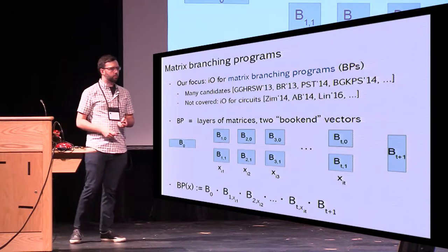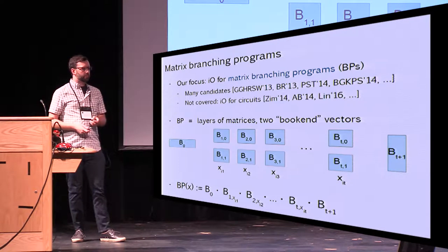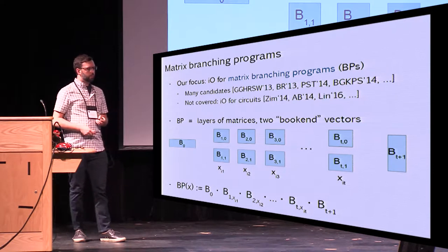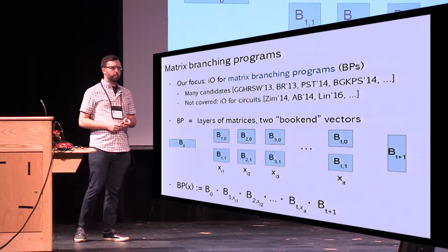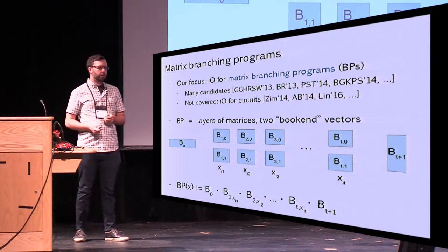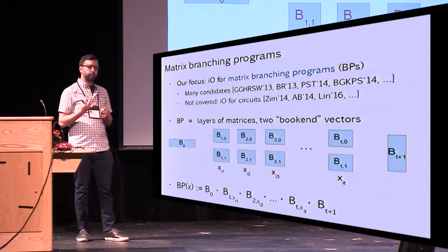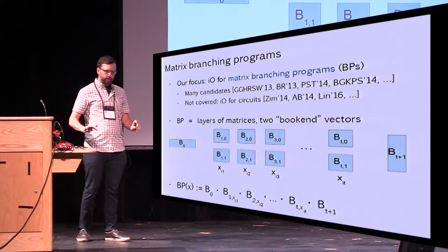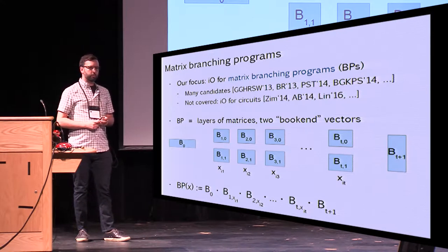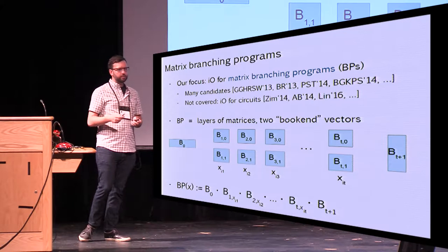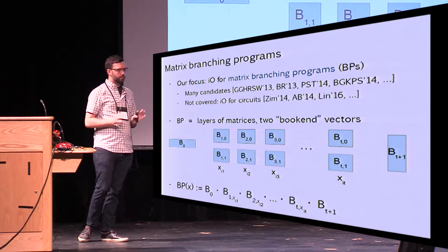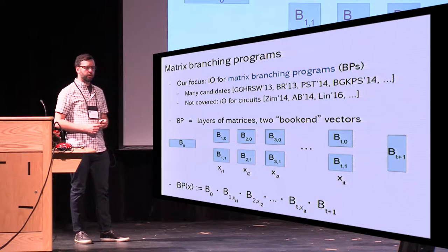The model of computation I care about in this talk is what's called matrix branching programs. There are many candidates for IO starting from matrix branching programs, and also a growing body that start from just circuits. I'm not going to talk about the ones that start from circuits — I'm just going to focus on IO for matrix branching programs. This is enough to get IO for all polynomial-time computation via some bootstrapping theorems.